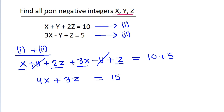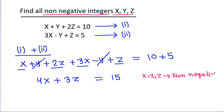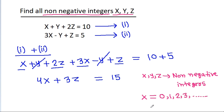So x, y, z are non-negative integers. So x can be equal to 0, 1, 2, 3 and so on, and z can be equal to 0, 1, 2, 3 and so on.